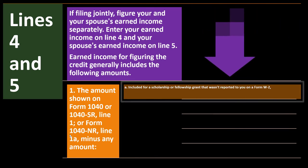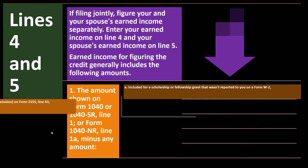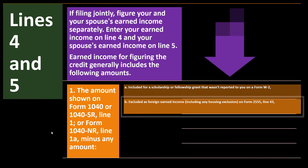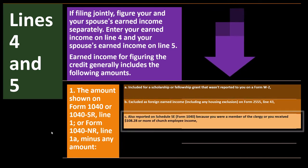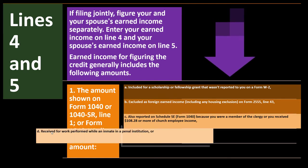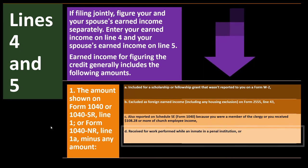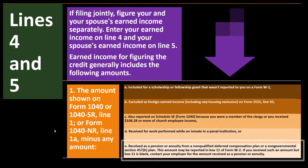Subtract from earned income: (A) scholarships or fellowship grants not reported on a W-2; (B) foreign earned income excluded on Form 2555 line 43; (C) amounts reported on Schedule SE because you were clergy or received $108.28 or more in church employee income — a notably small and unadjusted figure; (D) pay received while an inmate in a penal institution; and (E) pension or annuity from a non-qualified deferred compensation plan or non-governmental Section 457(b) plan.